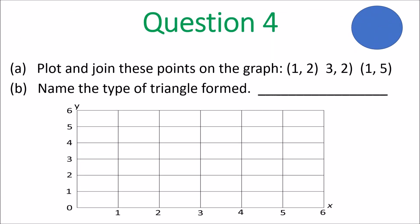And we move on to question four. Plot and join these points on the graph. You have three points there — look at them. That's A and B. Name the type of triangle formed after you join those points.